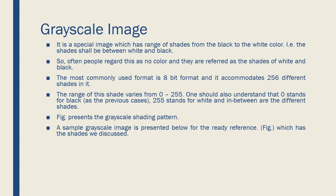The next one is grayscale. It is a very special type of image, and again grayscale is confused with black and white — it is not black and white, but it has black and white shades. Grayscale is not black and white, but it has the black and white shades. People often regard it as a no-color image. The most commonly used format is the 8-bit format, which accommodates 256 different shades. The range of the pixel shade varies from 0 to 255 — 0 is pure black, 255 is pure white, and from 0 to 255 it keeps varying, and all of those are referred to as the shades.